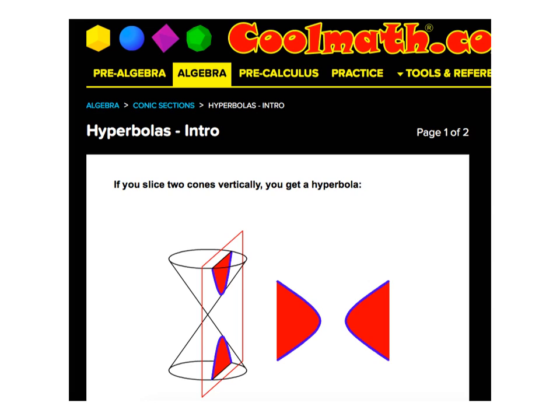So as we begin with hyperbolas, you'll remember that every conic can be described in how you slice a cone, or in this case two cones, and it can also be described with distance.